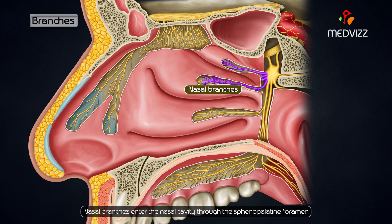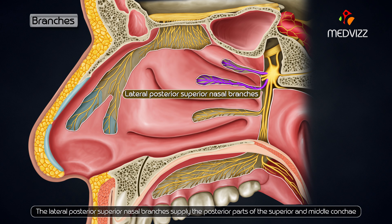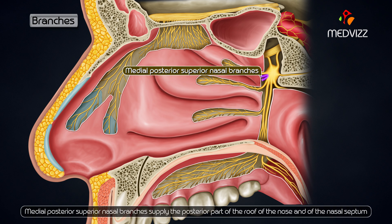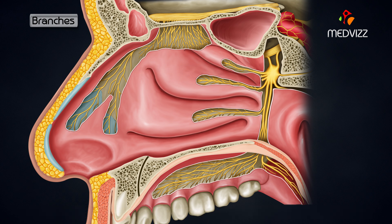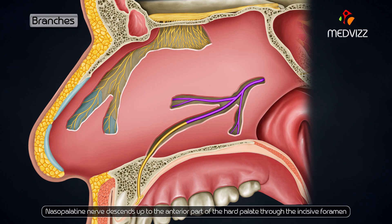Nasal branches enter the nasal cavity through the sphenopalatine foramen. The lateral posterior superior nasal branches supply the posterior parts of the superior and middle conchae. The medial posterior superior nasal branches supply the posterior part of the roof of the nose and of the nasal septum. The largest of these nerves is the nasopalatine nerve, which descends to the anterior part of the hard palate through the incisive foramen.